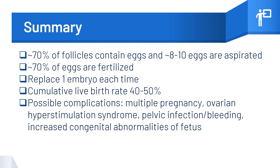To summarize, around 70% of follicles seen on ultrasound contain eggs, and around 8 to 10 eggs are aspirated in each IVF cycle, though this is different for different women. Not all eggs will be fertilized — an average of 70% of eggs are fertilized — and not all of them would continue to develop as embryos. We advise replacing one embryo each time. The cumulative live birth rate after one IVF cycle is around 40 to 50%.